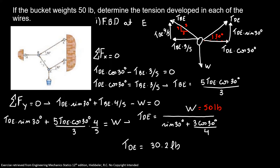Using our value of tension DE, tension BE is equal to 43.6 pounds. So, tension DE is equal to 30.2 pounds and tension BE is equal to 43.6 pounds.